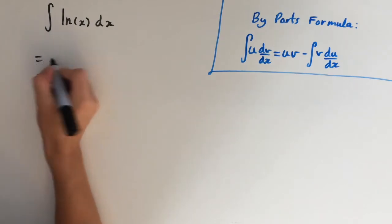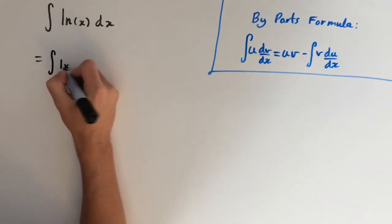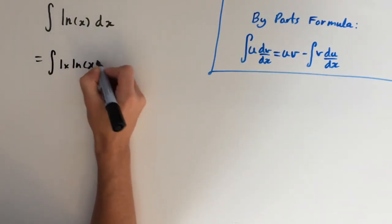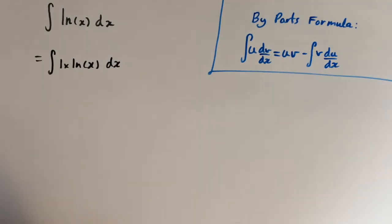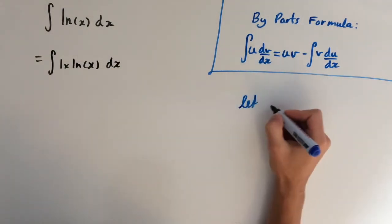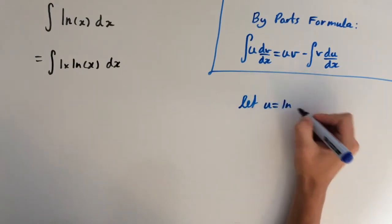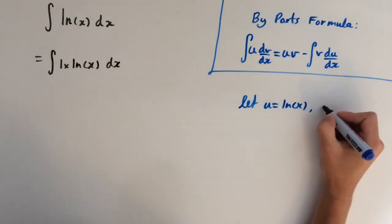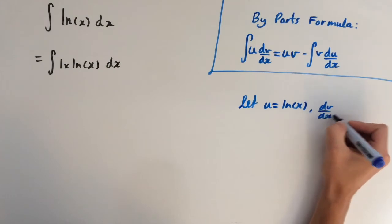So I'm going to write this as the integral of 1 times ln(x) dx and now we're going to let u equal ln(x) and dv/dx equal 1.